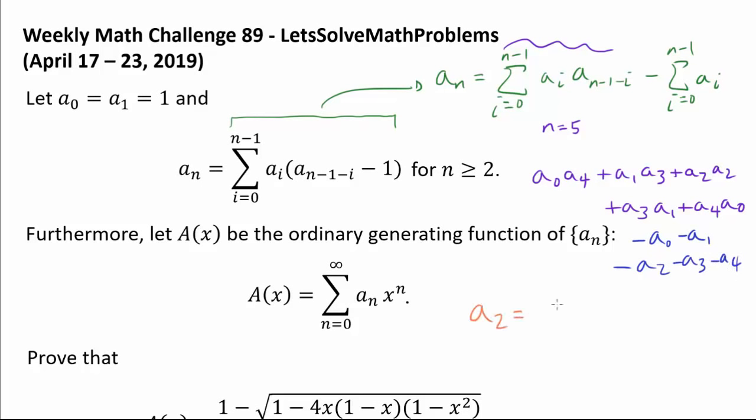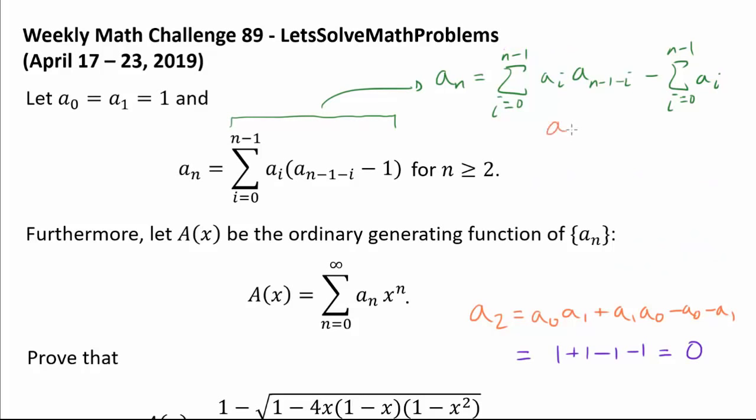So using this, for example, a₂ would be a₀a₁ plus a₁a₀ minus a₀ minus a₁. And using the fact that a₀ and a₁ are both 1, we can calculate a₂ to be 1 plus 1 minus 1 minus 1 or 0. So we see that a₂ is 0, and we can continue this process using this recurrence relation to find a₃ to be negative 1, a₄ to be negative 3, and so on. Before we proceed any further, let's take this time to recognize Gabriel N, who was the very first person to correctly answer this problem last week. A huge shoutout to Gabriel N.